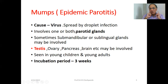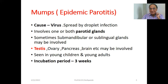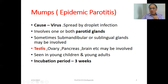Mumps involves one or both parotid glands. Sometimes the submandibular or sublingual glands can be involved, but very rarely. Most problematically, the testis — most important organ for spermatogenesis — the ovary, pancreas, and brain can also be involved. Mumps and its relation to testicular problems, orchitis, is very common in general medical practice and can affect sperm formation, potentially causing sterility.